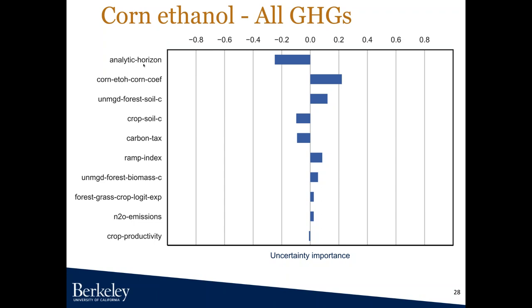One of the things you can do with the Monte Carlo is look at the contribution to variance of different uncertain parameters. The analytic horizon — which I varied from 20 to 40 years — turns out to be the top contributor to uncertainty. Whether there's a carbon tax and how much it is also matters significantly. The ramp index (fast or slow) is also important, as well as more technical factors like carbon density of soil and under unmanaged forests or crops. Half of the top six parameters are really model choices or subjective — they aren't just typical parametric uncertainty in carbon intensity estimates.